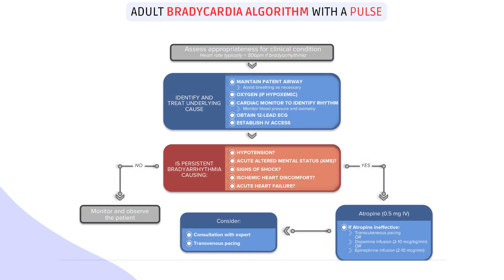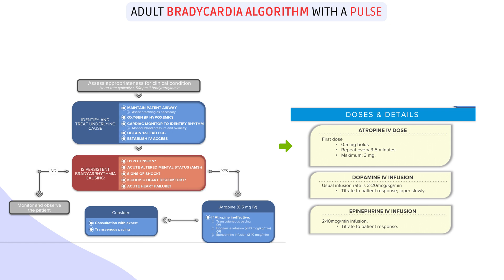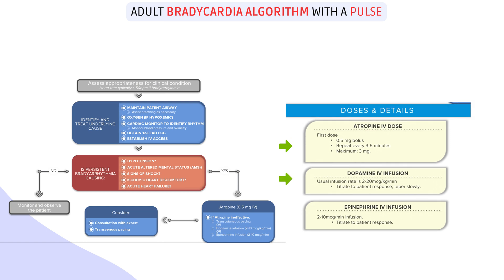Here is a quick overview of the adult bradycardia algorithm by the AHA. First, rapid assessment of bradycardia and identification of the underlying cause. Next, treat the underlying cause accordingly. Next, if bradyarrhythmia persists, evaluate the complication and intervene. First, try atropine; if not working, the next option is transcutaneous pacing. If both of these don't work, medications such as dopamine and epinephrine. By following the ACLS bradycardia algorithm, healthcare professionals can effectively manage patients with bradycardia, improving their chances of a positive outcome.